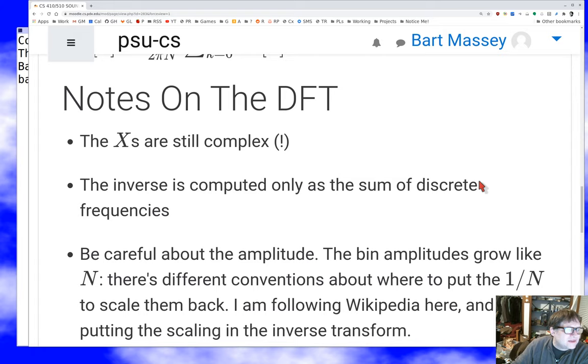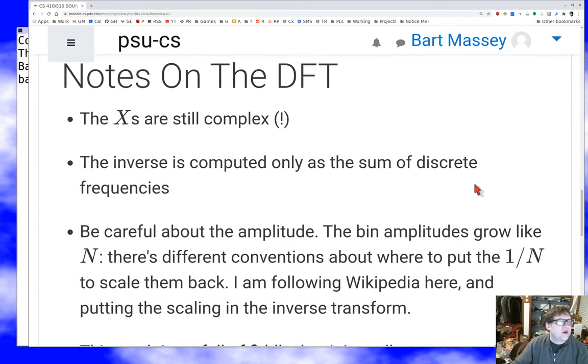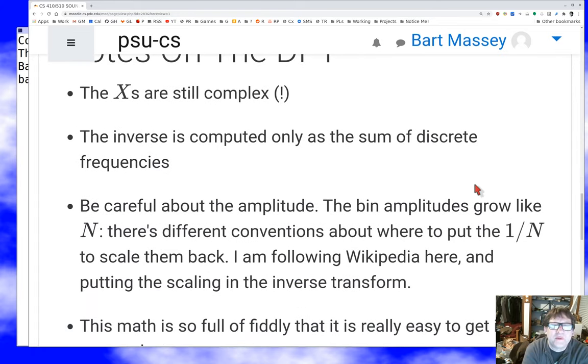And yeah, the x's are still complex, right? When I've got the answer here, what I'm going to get out is a complex number representing a frequency. And just like in the continuous case, I'm probably interested in the magnitude of that complex number, the absolute value, right? So that same computation applies if I want to get the actual power. And then I can get the phase with an arctangent just like I did before.